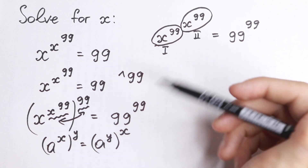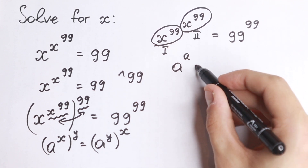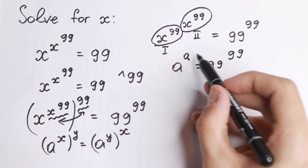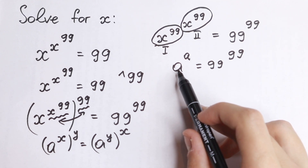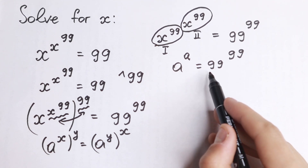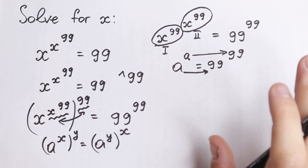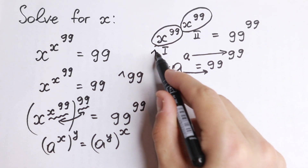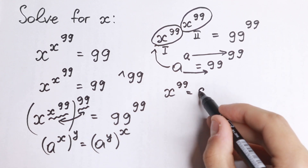This looks like a to the power a equal to 99 to the power 99. The one and only case this equation works is when a equals 99, because a equals 99 on both sides. In our case, a equals x to the power 99, so we have x to the power 99 equal to 99.